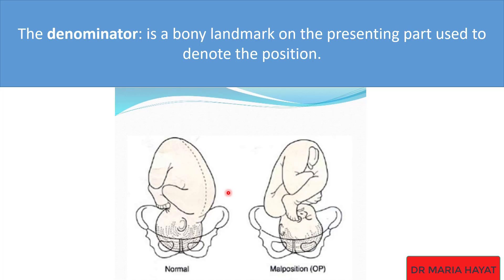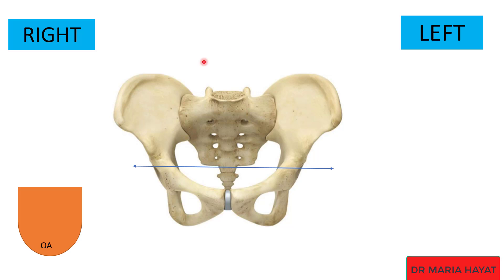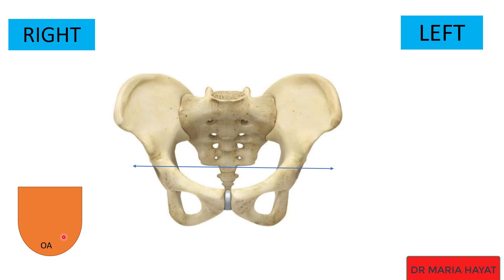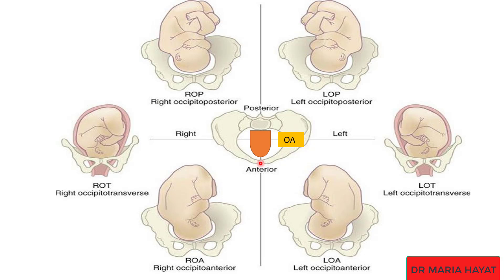What is the normal fetal position? In simple words, if we divide the maternal pelvis into two parts — the posterior part and the anterior part — first we identify the presenting part. If the presenting part is vertex, we choose the occiput. If this occiput is towards the anterior side of the pelvis, we say it is a normal position — that is, occiput anterior. If the occiput is present directly behind the pubic symphysis, we say it is direct occiput anterior.